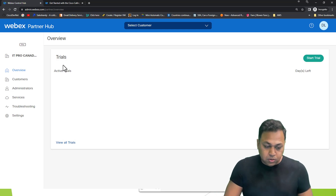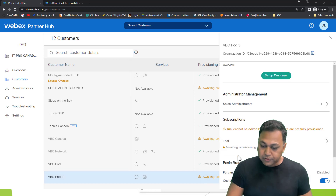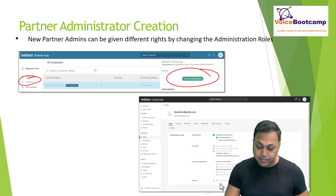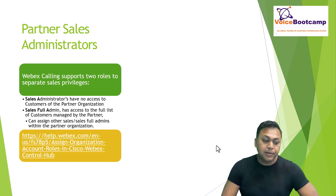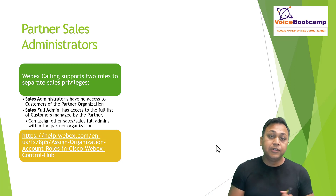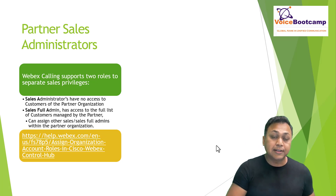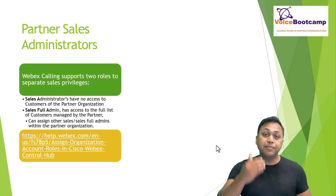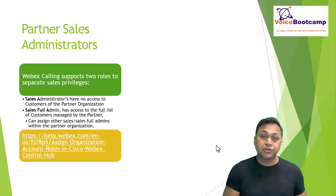Looking at all trials, VBC Pod 3 is now waiting for provisioning. As a partner, I'll click on Setup Customers to help configure the setup. That's how we add new customers. Regarding the partner sales administrator role: sales administrators have no access to the customers of the partner organization — a sales admin will not have login access using sales administrator privileges. However, a sales full admin has access to the full list of customers managed by the partner. If I make you a full admin, you'll have full access to all customers in my list.